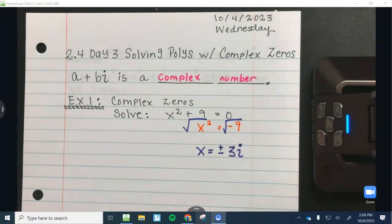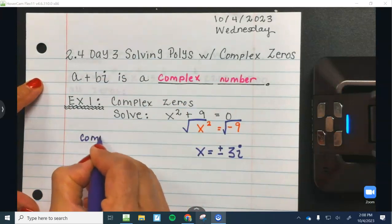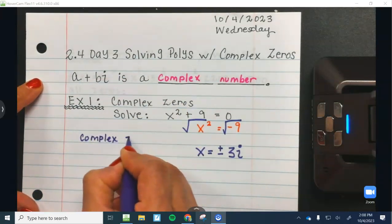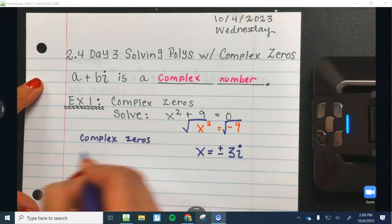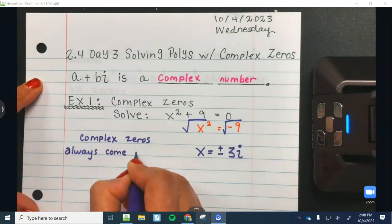So here's super important concept number one that you need to understand before we move forward. Complex zeros always come in opposite pairs. One of them is negative. One of them is positive.